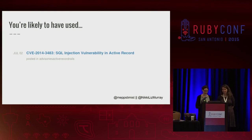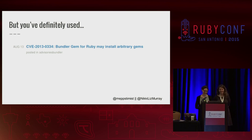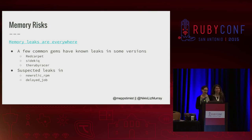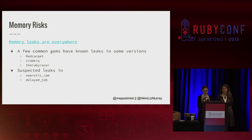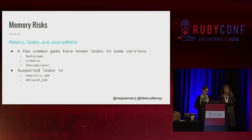You've probably used Active Record at one point or another, and this summer it had a SQL injection vulnerability. Maybe you don't use Rails and use something like Lotus instead. But you've probably used Bundler — and this summer it arbitrarily installed gems that you didn't want or ask for. There's also memory risk. A lot of common gems have known memory leaks in some versions. Red Carpet, Sidekiq, and the Ruby Racer all have documented and now fixed memory leaks, but there are still versions out there that might be on your gemfiles. Currently there are suspected leaks in New Relic RPM and Delayed Jobs — if you want to make a pull request that fixes these, that would be great.